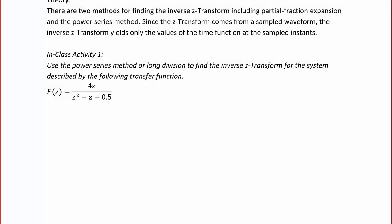In Class Activity 1, use the power series method or long division to find the inverse Z transform for the system described by the following transfer function: F of Z is equal to 4Z divided by Z squared minus Z plus 0.5. I'm going to do long division, so I'll have 4Z divided by Z squared minus Z plus 0.5.